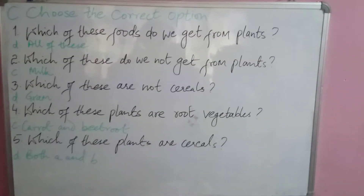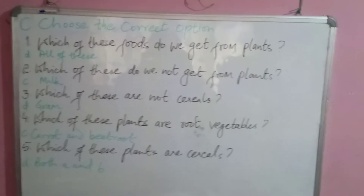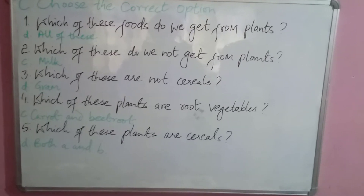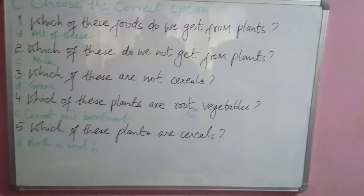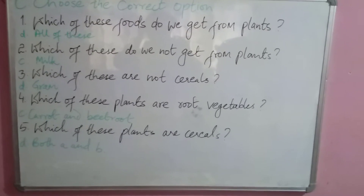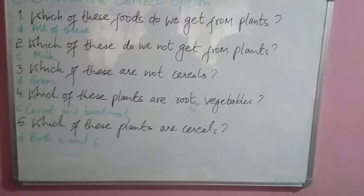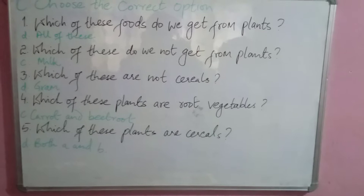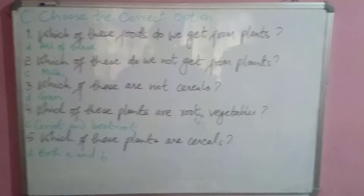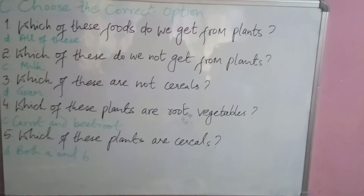Question number four: which of these plants are root vegetables? The options are sugarcane and potato, broccoli and cauliflower, carrot and beetroot, and spinach and lettuce. The correct option is carrot and beetroot.